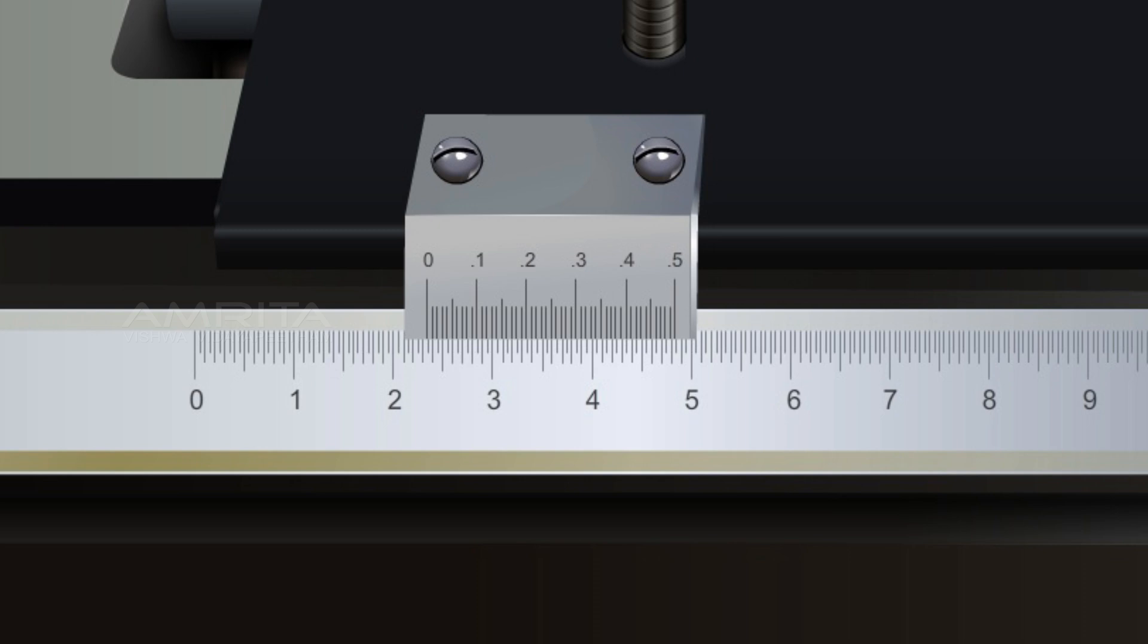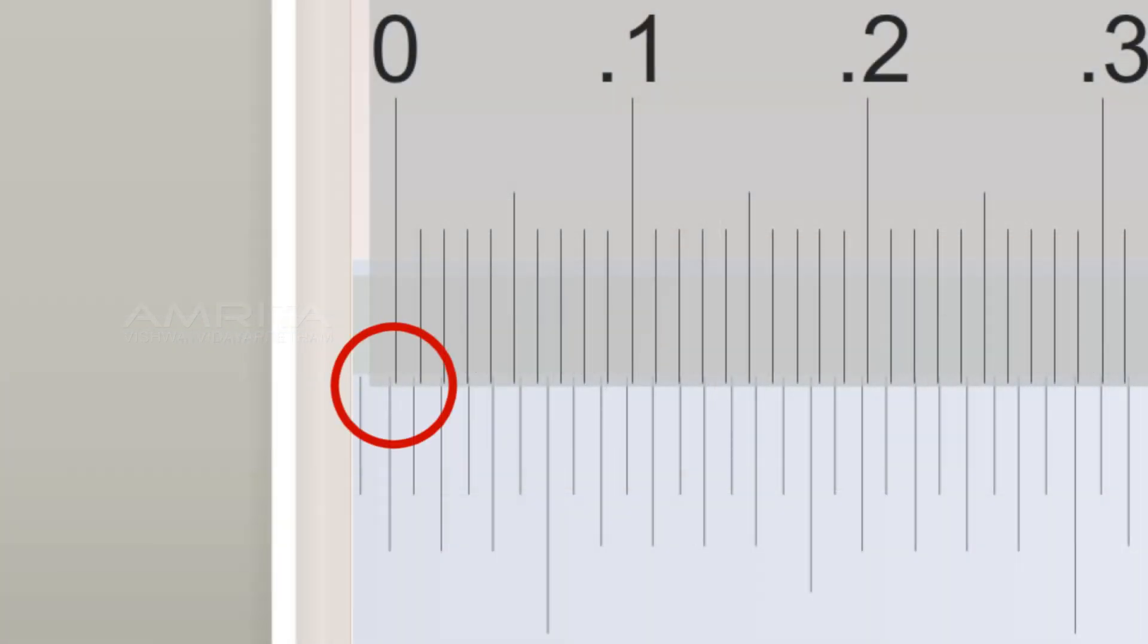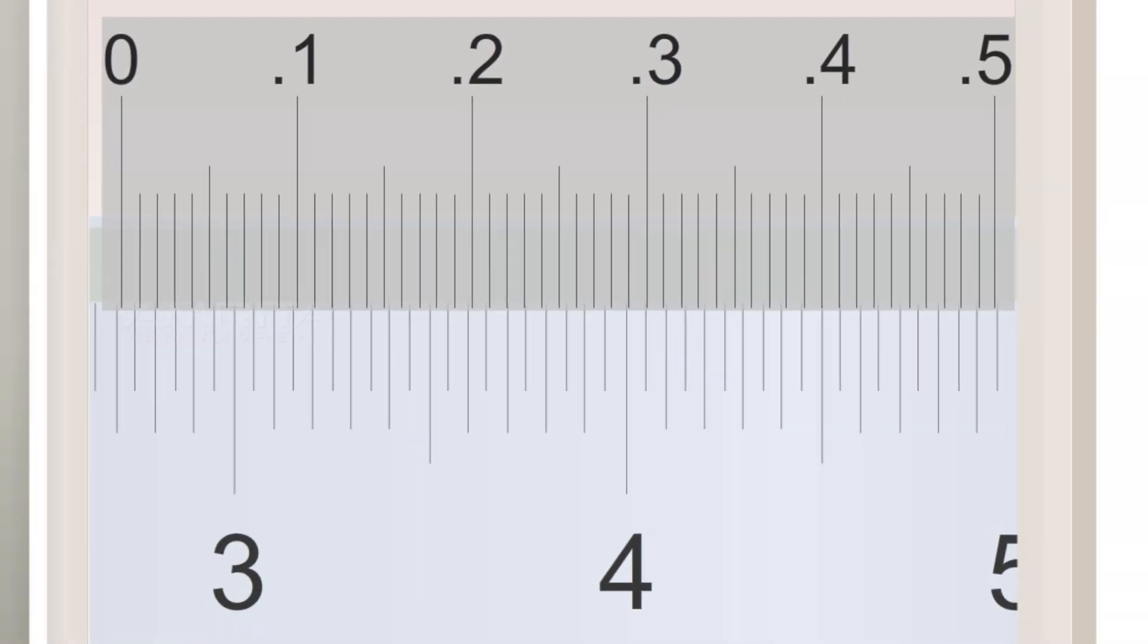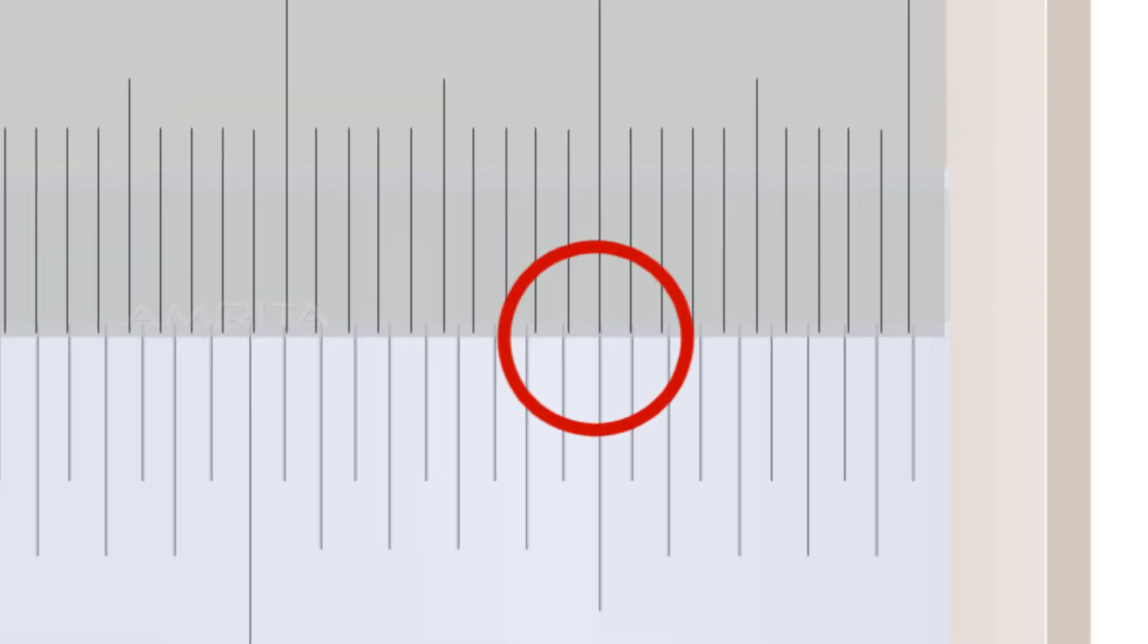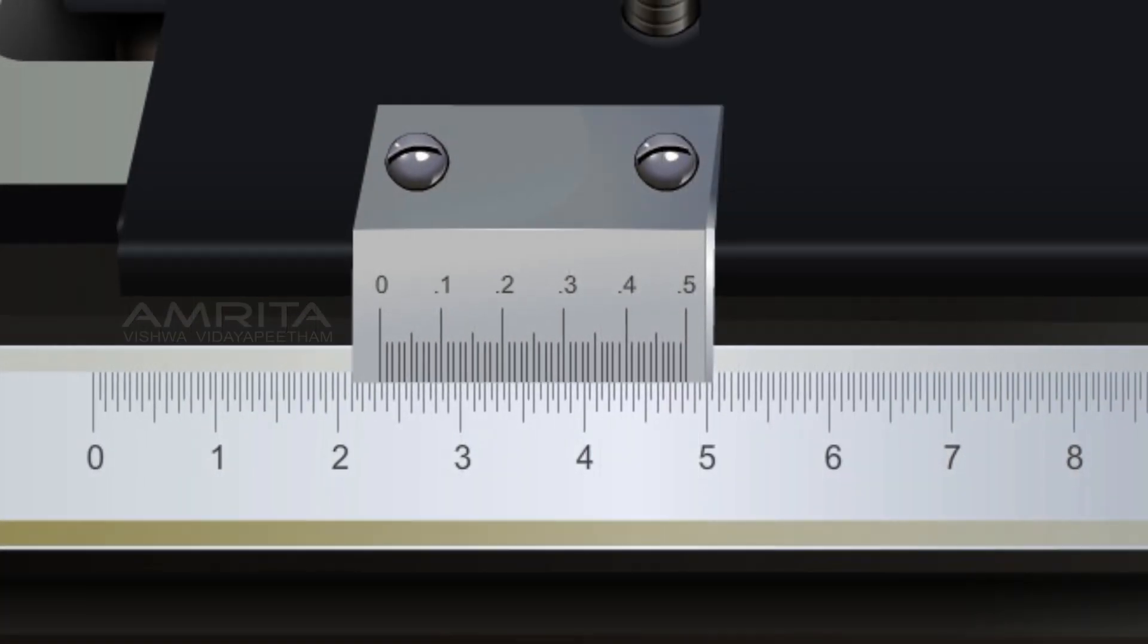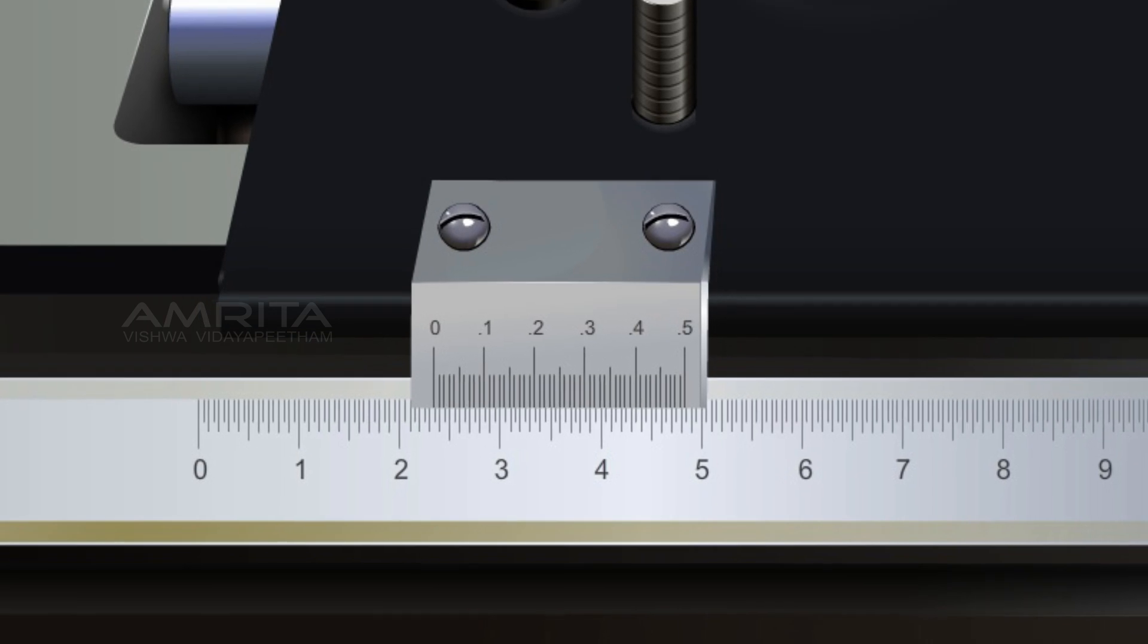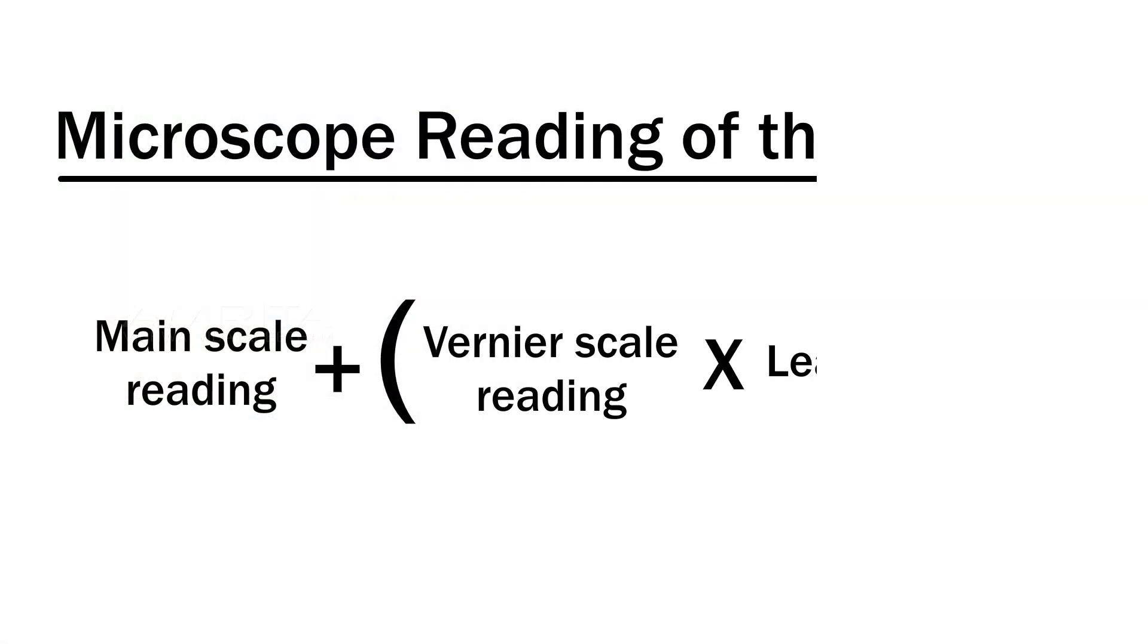Take the reading of the main scale just before the 0th position of the vernier scale. Only one line of the vernier scale will coincide with the main scale. Take the reading of that point from the vernier scale. So the reading can be calculated as main scale reading plus the product of vernier scale reading and least count.